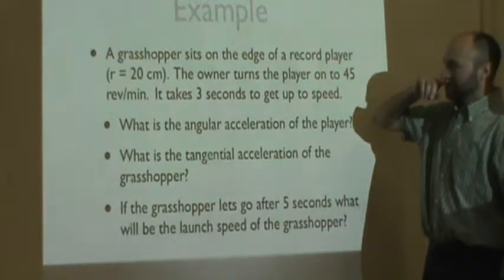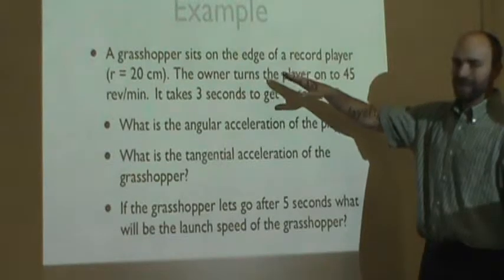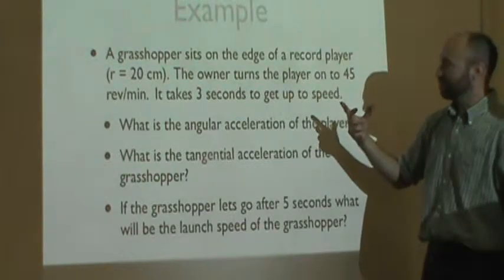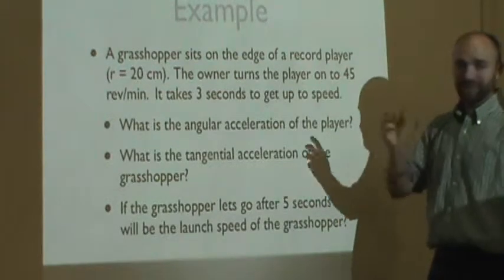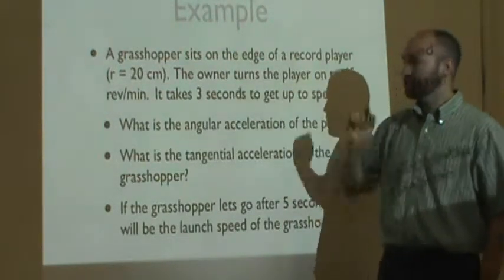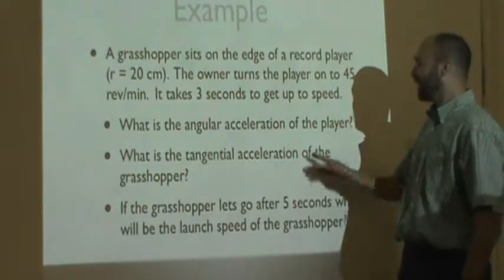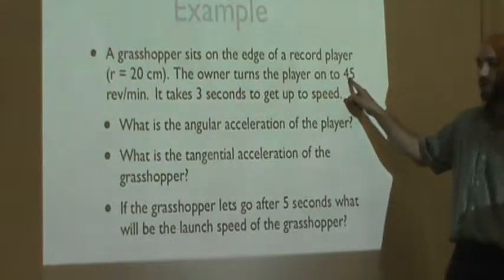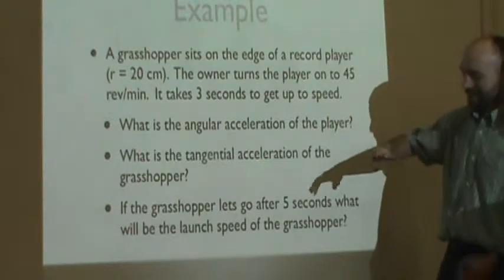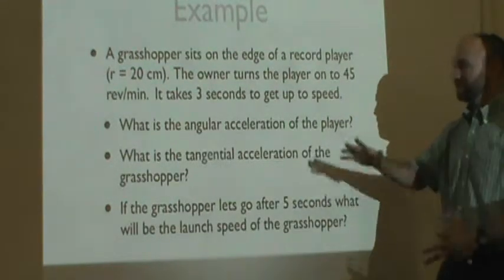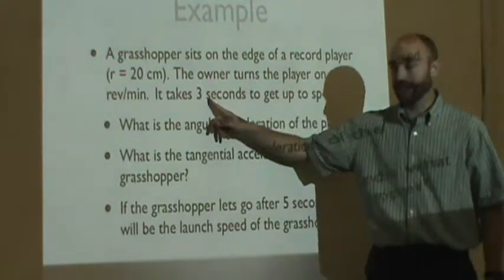So you've got a grasshopper sitting on the edge of your record player and for some reason you don't want to touch the grasshopper. So to get rid of the grasshopper, you just turn the record player on full speed. The fastest those things went was 45 RPMs. So you crank it up full speed and those things take a while to get up to speed. In fact, this one takes a whole three seconds to get up to speed.